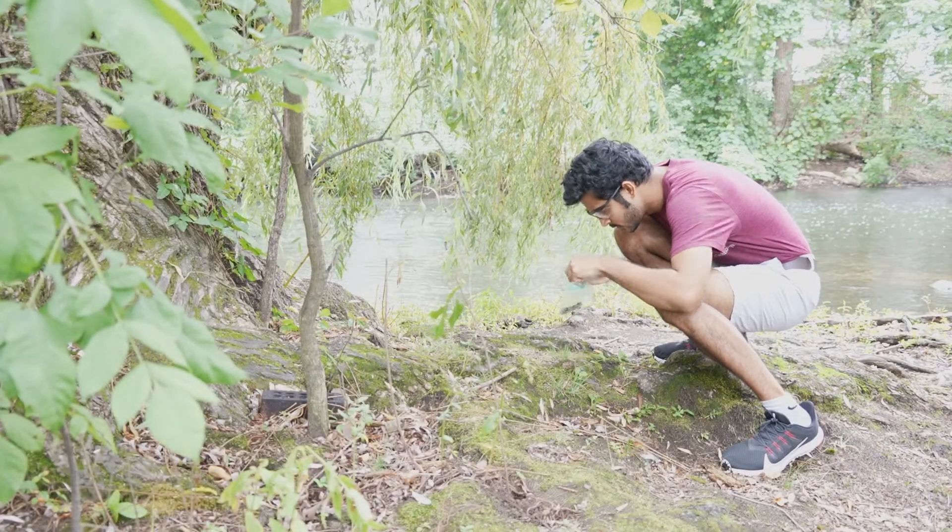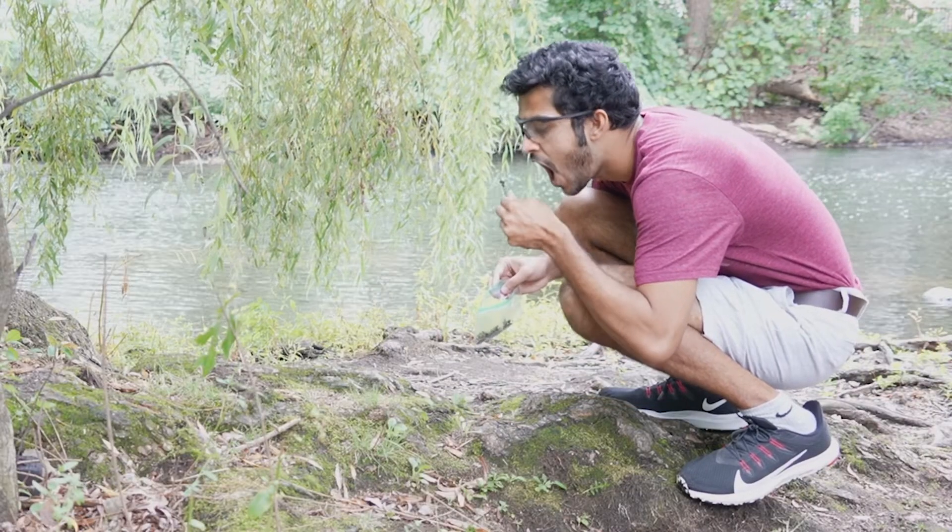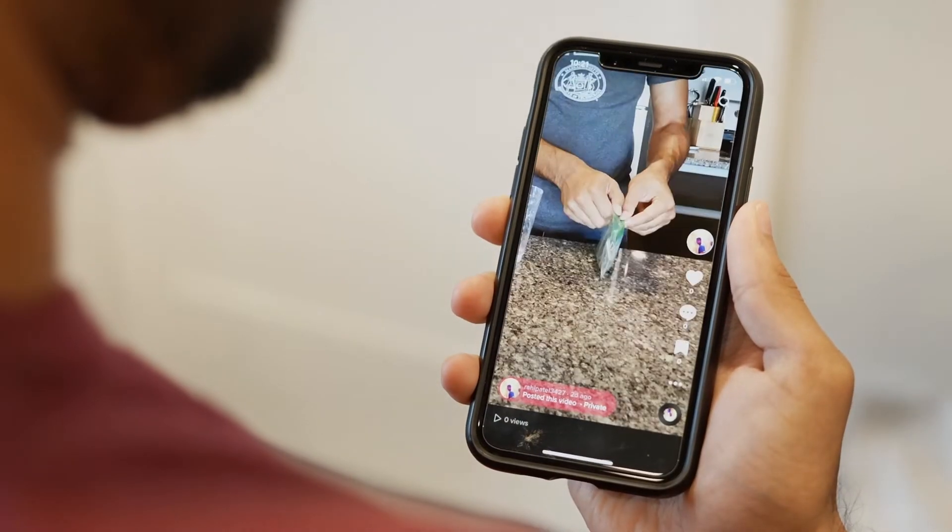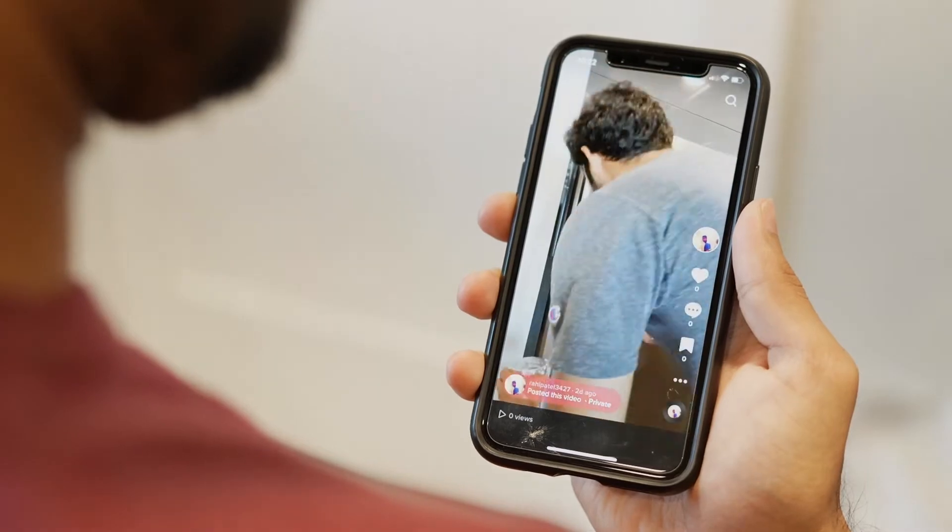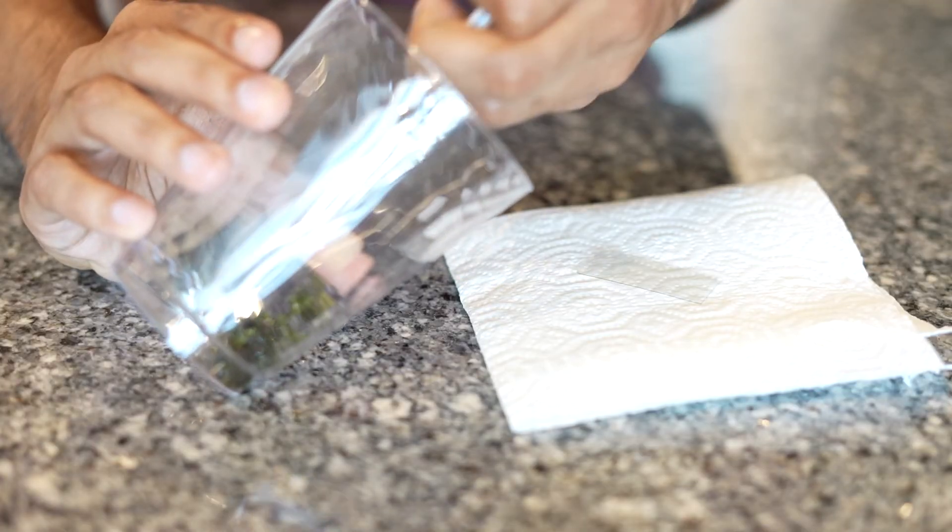Moss and lichen is where you'll most likely find them. Go out and collect some. Research methods on how to extract the tardigrades from the moss or lichen. Finally, try to find them with your microscopes.